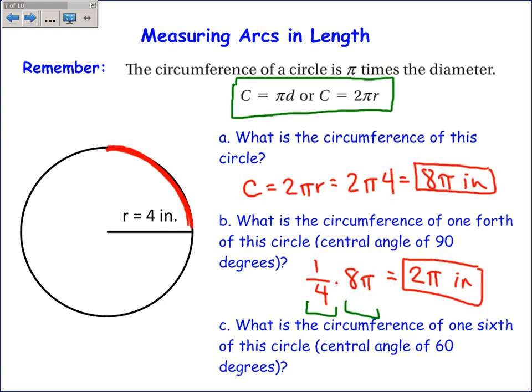What is the circumference of 1 sixth of this circle? Again, I will take the fraction 1 sixth and multiply that by the circumference, 8 pi. And 1 sixth times 8 is 1.3 repeating pi, or leaving it as a fraction is 4 thirds pi inches.